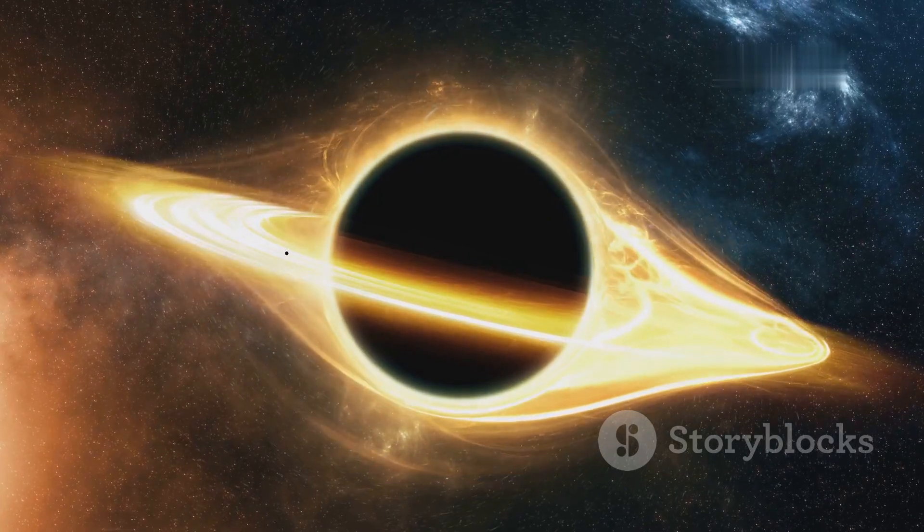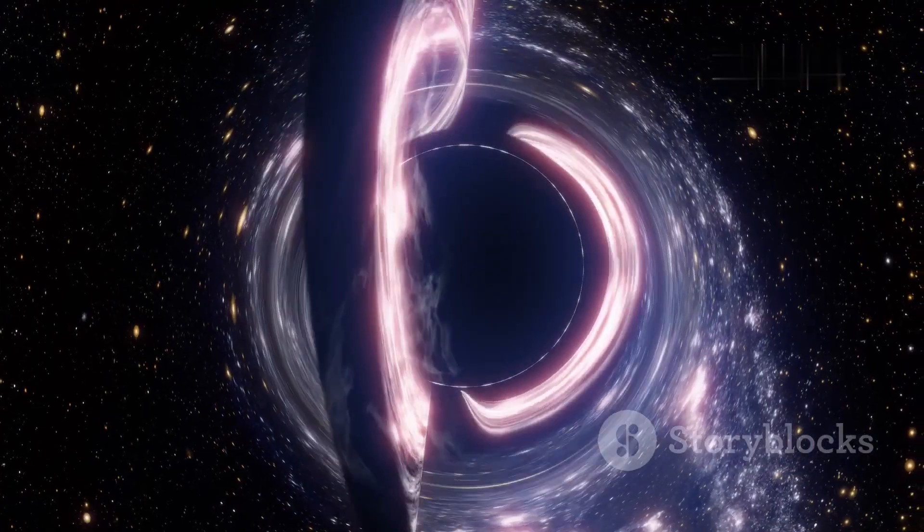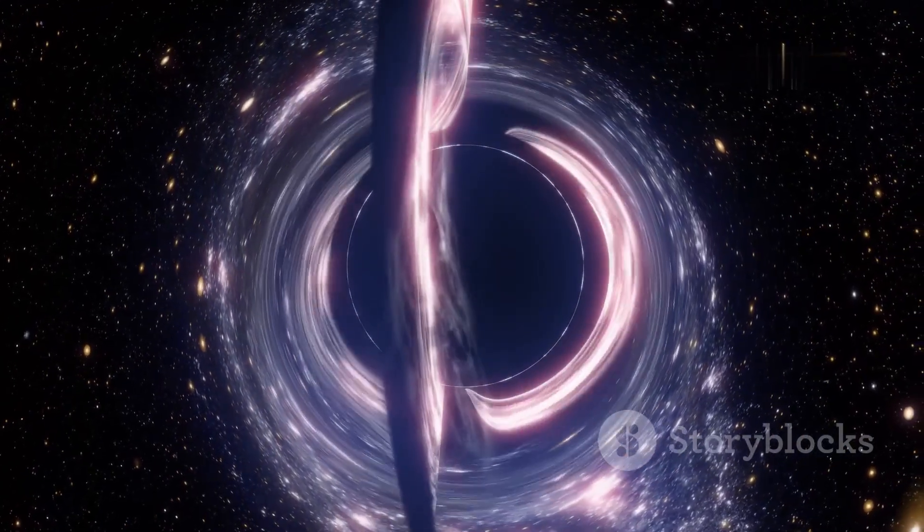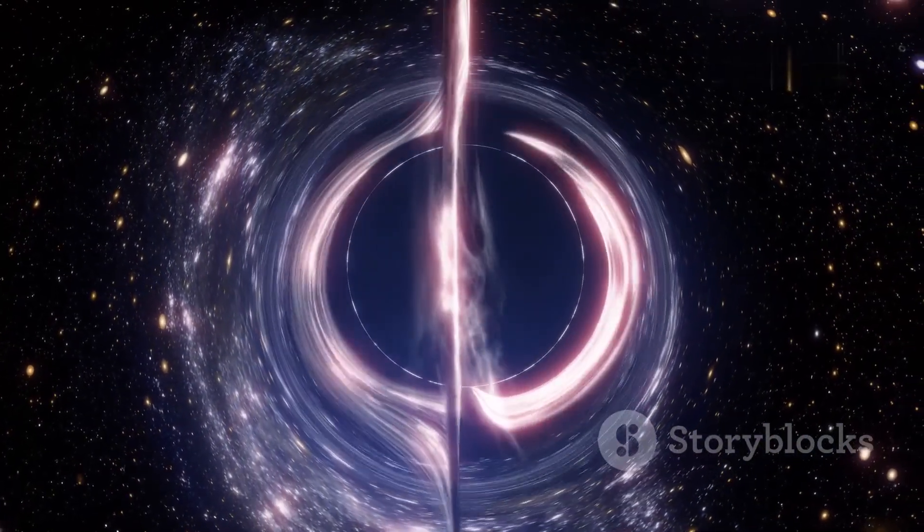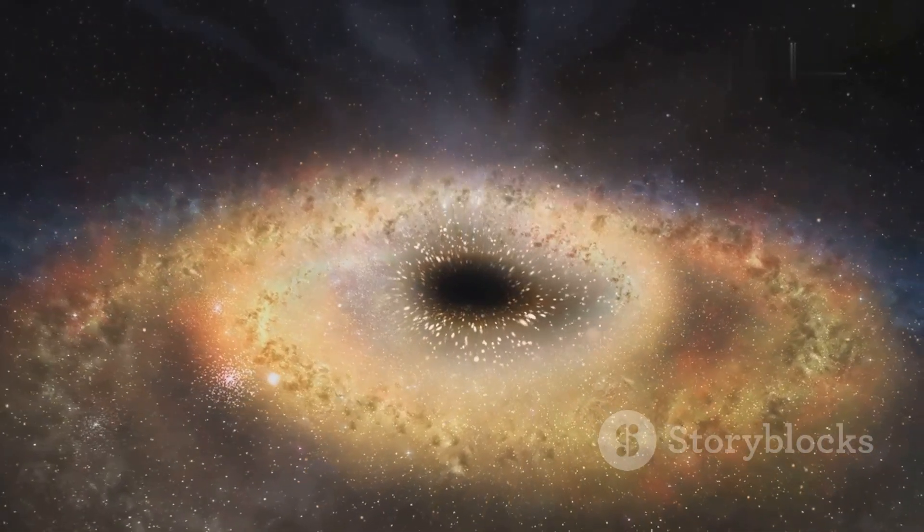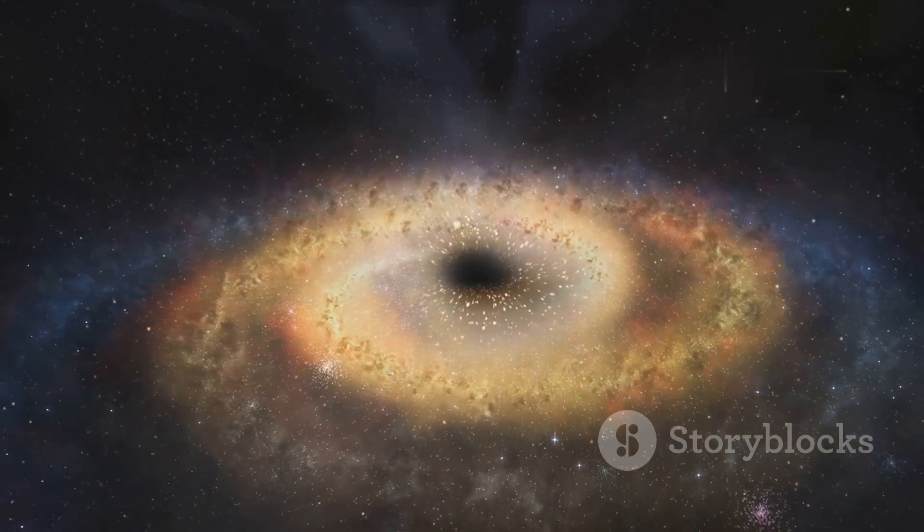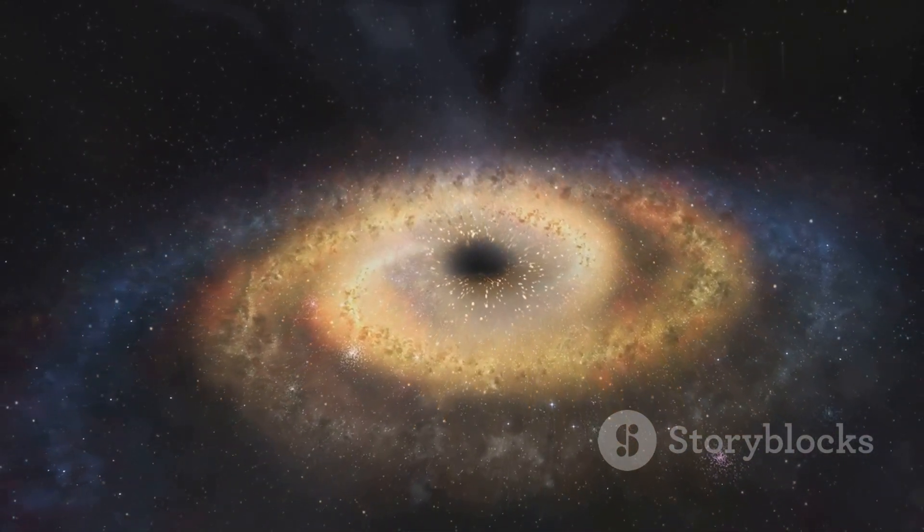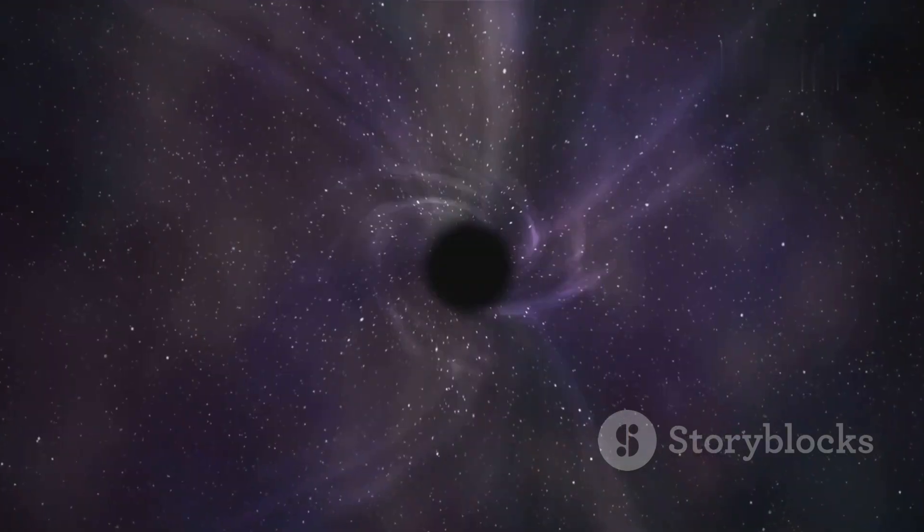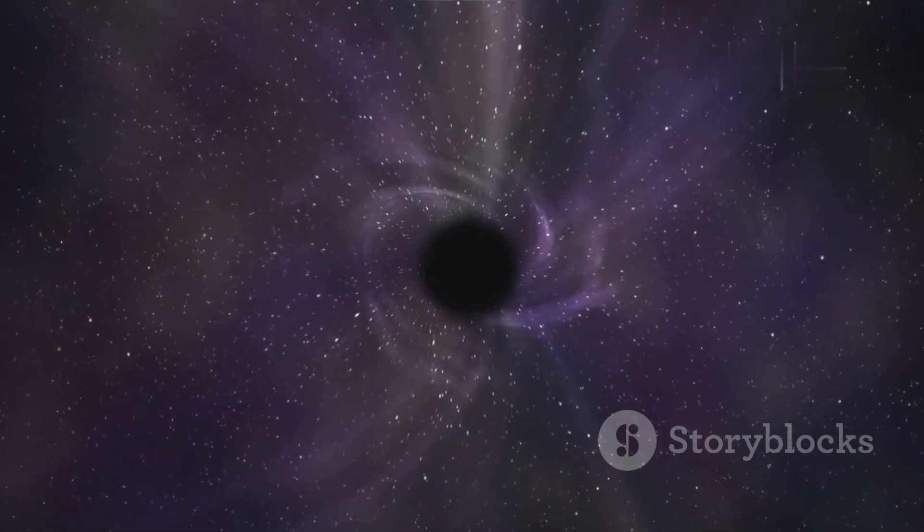These black holes can stretch light into thin, twisted streams. Anything that gets too close is pulled in, disappearing into what we can only imagine as a realm beyond physics as we know it. For instance, in the center of the galaxy M87, Webb has confirmed a black hole with a mass of over six and a half billion suns. To give you a sense of scale, a black hole like this could consume entire solar systems.